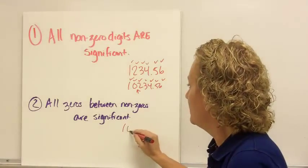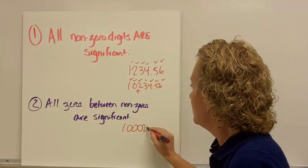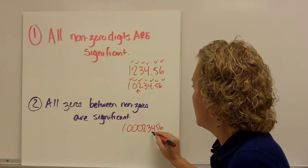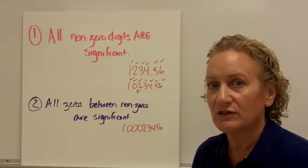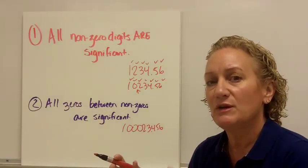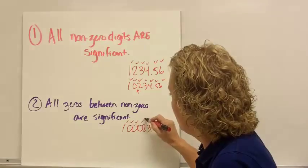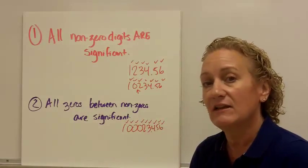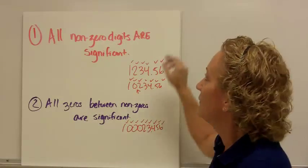Likewise, if I had 1000234.56 — put the decimal anywhere, it doesn't matter — all of those zeros are significant because all three of those zeros are between non-zeros. So, you would have 9 significant figures.